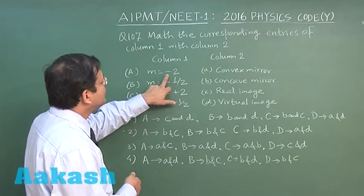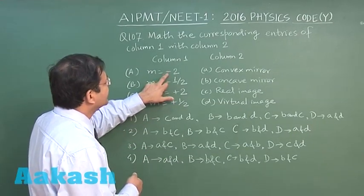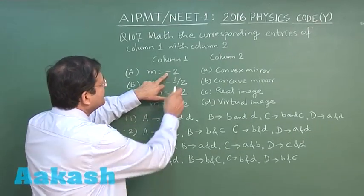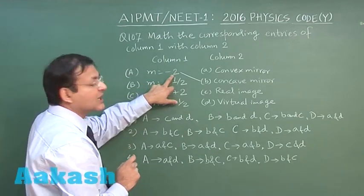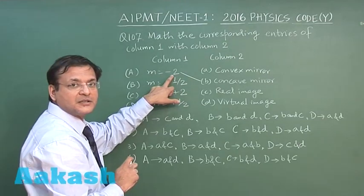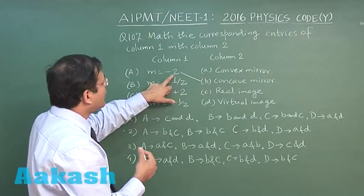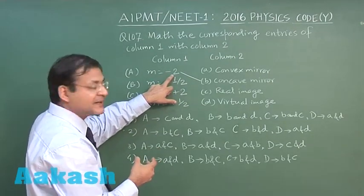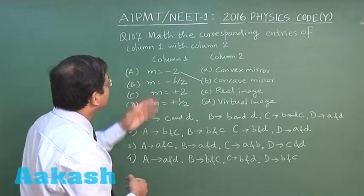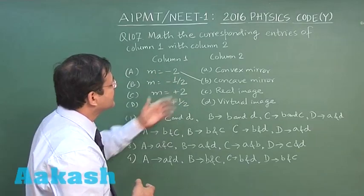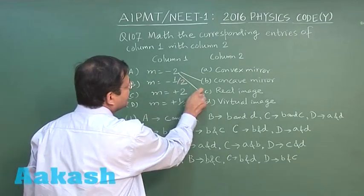If m is equal to minus 2, the minus means it is concave mirror. It will be matching B, and magnification larger than 1, larger than 1 is not given by convex mirror. It is given by the concave mirror and this negative magnification means that it is a real image. Negative magnification means real image and the value if it is more than 1, it will be concave mirror.